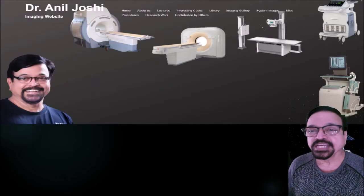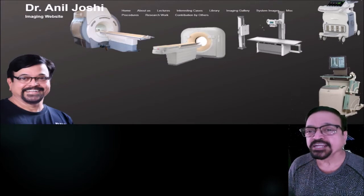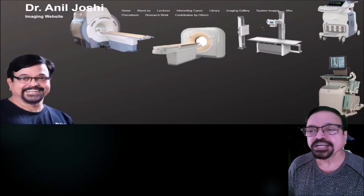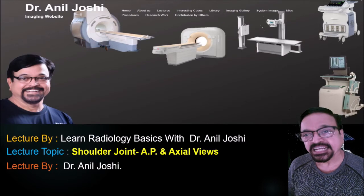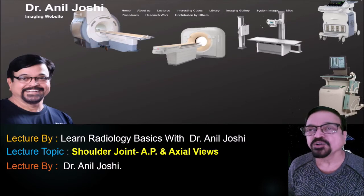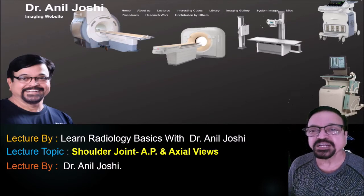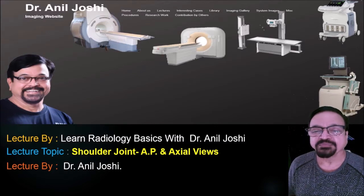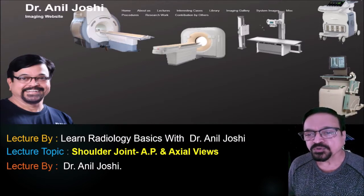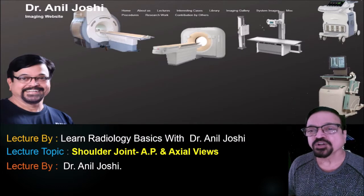We are going to see in this series what are the types or methods of taking these radiographs, what are the advantages of each method, and what are the anatomical structures we can see in them. We should also see what are the indications and the contraindications, which stands good for the contraindication of radiation. Now we will go to the details of radiographic projections of the shoulder joint.